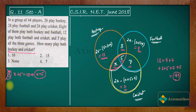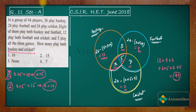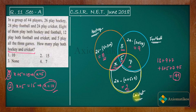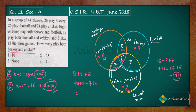The second option tells us x + 5 = 15, so x = 10. With x = 10, the hockey-only players are 8 and the cricket-only players are 2. Adding everything: 8 + 9 + 2 + 10 + 5 + 7 + 3 = 34 + 10 = 44. We get exactly 44 players, confirming this is correct.